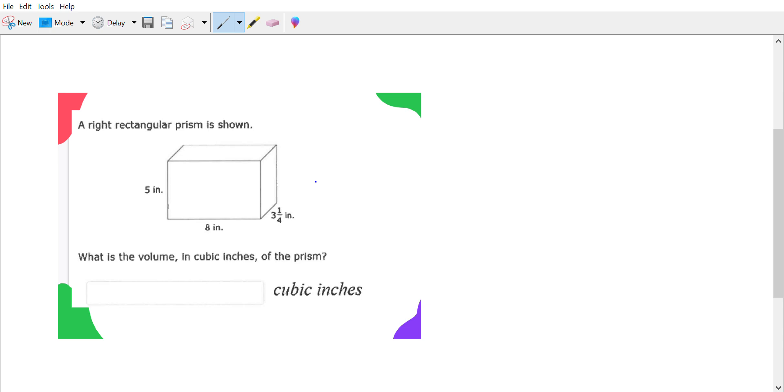A right rectangular prism is shown. What is the volume in cubic inches of the prism? So we know volume equals length times width times height. We're gonna go ahead and fill in what we know. Our length is eight.